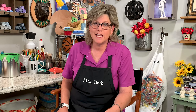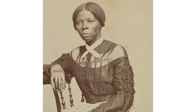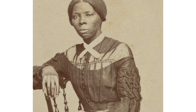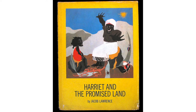Because he loved history, especially African American history, he started another series — 31 panels this time, telling the story of Harriet Tubman and the Underground Railroad. The panels were such a success that Jacob used them in a book called Harriet and the Promised Land.